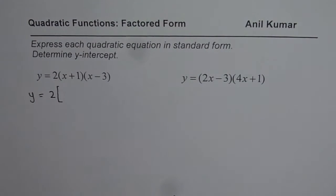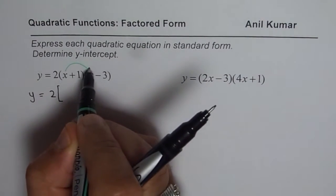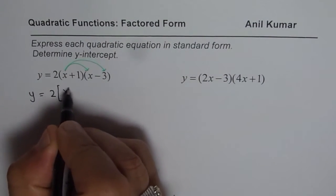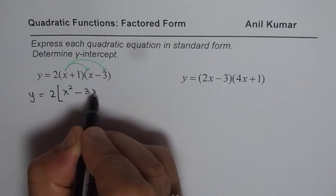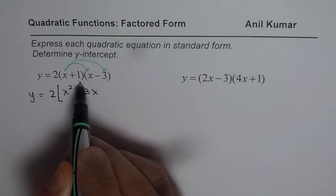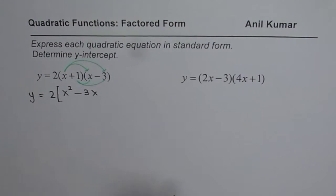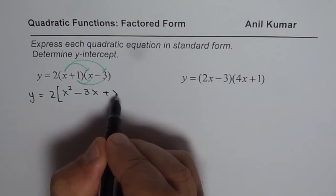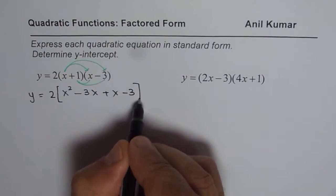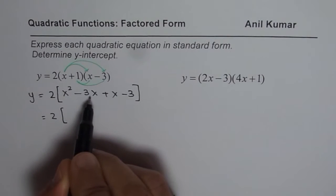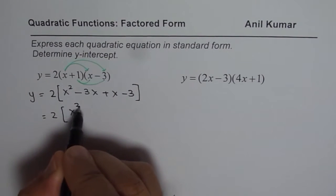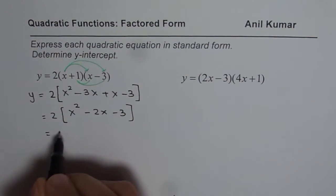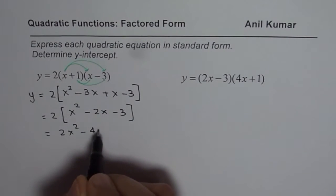To multiply the binomials, we apply the distributive property. Multiplying x with x gives x squared, and x with minus 3 gives minus 3x. Then multiplying 1 with x gives plus x, and 1 with minus 3 gives minus 3. Next, we combine the like terms: minus 3x plus x gives minus 2x minus 3. Now multiplying everything by 2, we get 2x squared minus 4x minus 6.